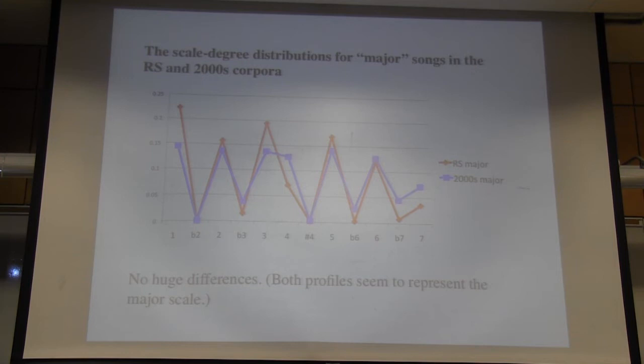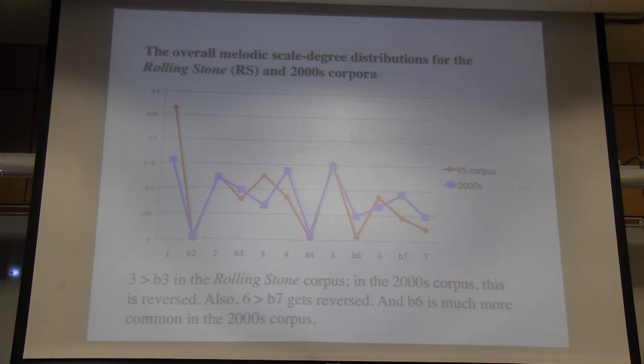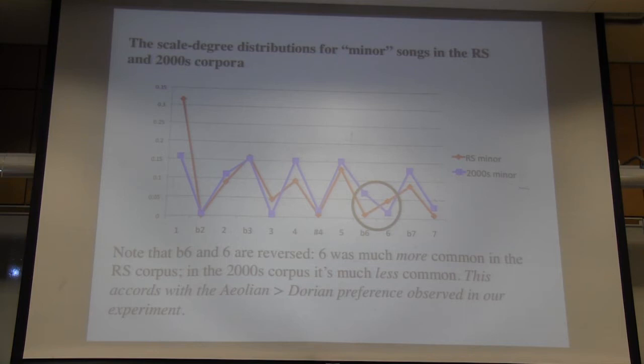One thing that was remarkable about the Rolling Stone corpus is that flat 6 really doesn't show up at all. If you'd used the methodology from the 2000s corpus for the Rolling Stone corpus, would it have crept in through passing notes? It's possible, but I don't think the difference in methodology could explain why raised 6 is more common in the Rolling Stone corpus and less common in the 2000s corpus — that's a real difference.